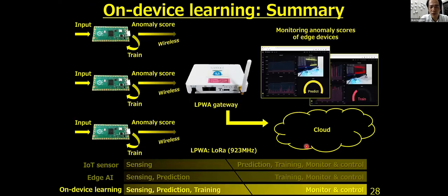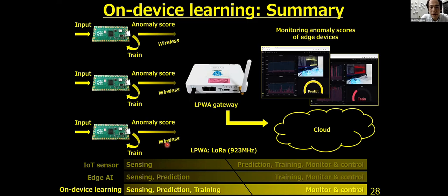In summary, with on-device learning, sensing, prediction, and training are all done at the edge side. Our concept was implemented in a wireless sensor node consisting of Raspberry Pi Pico and a LoRa module. Sensing, FFT, anomaly detection, training, and communication can all be executed every one second. Communication size is significantly reduced because only prediction results are transmitted — 16 bytes — so low-power LoRa is enough, reducing communication energy consumption, which is important for battery-powered nodes. Accuracy tends to be high even when the training and testing functions are quite different, because on-device learning can retrain at the deployed environment. That's all, thank you for listening.